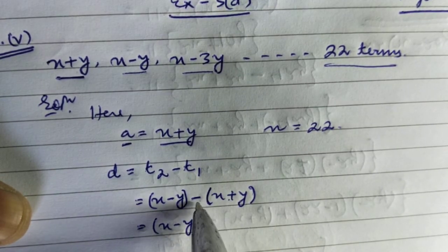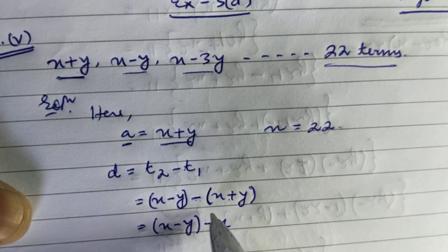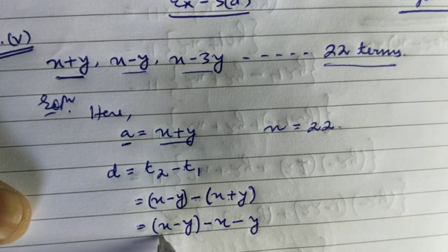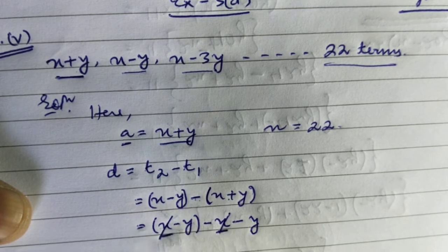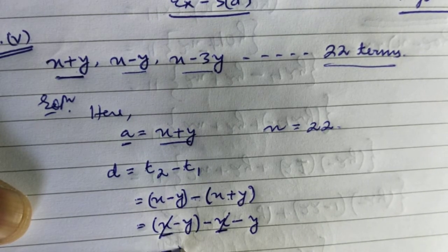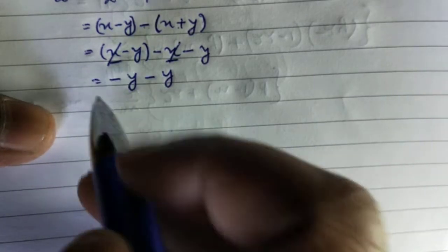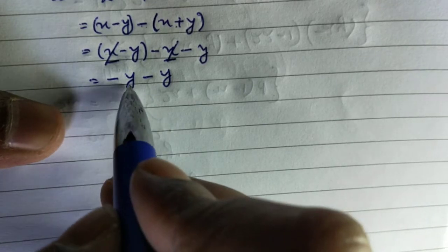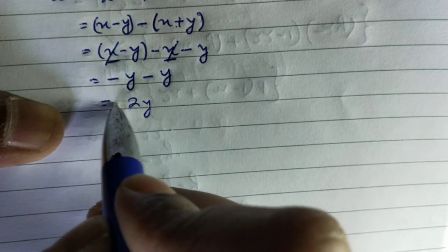Since there is a minus sign and a bracket, we need to multiply the minus with x first, giving us minus x, then multiply the minus with positive y, giving us minus y. So we have x minus x — these cancel — then minus y minus y. Since both have minus signs, minus minus becomes plus, so we add the two y's to get 2y, but both are negative so the result is minus 2y.